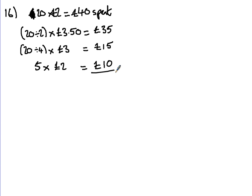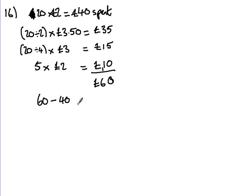That makes £10.00 from the last group. Adding those up — £35, £15, and £10 — carry a 1, gives you £60.00. So if he spent £40.00, we do £60 take away £40, and that's a £20.00 profit.